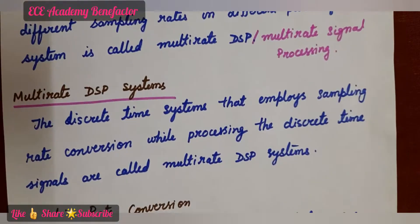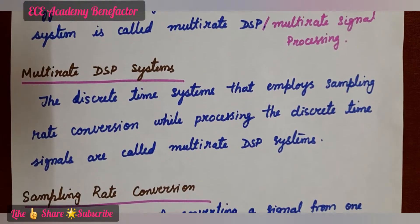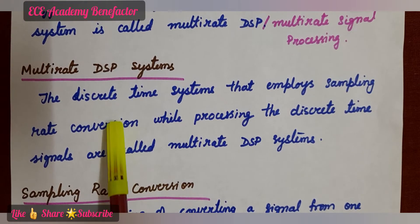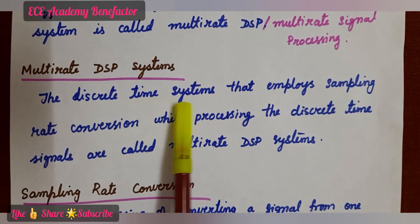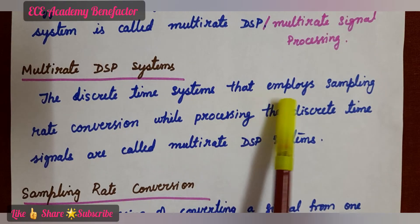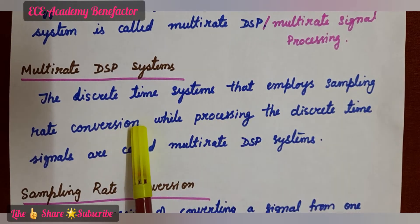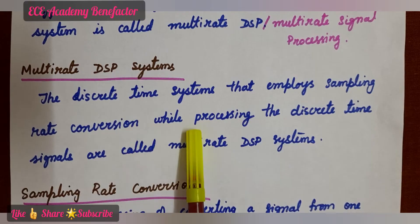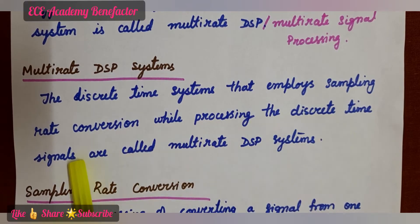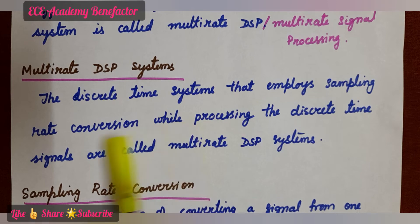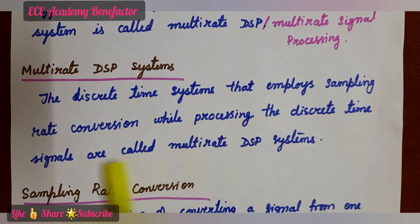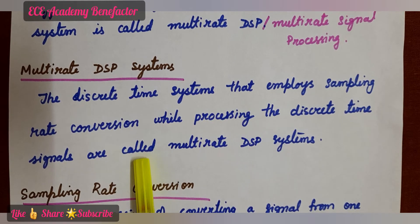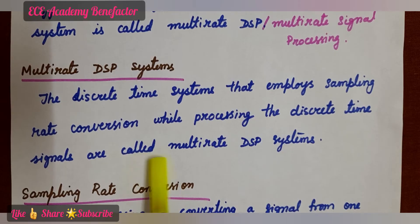The next definition is multirate DSP system. The discrete time systems that employ sampling rate conversion while processing the discrete time signal are known as multirate systems or multirate DSP systems.